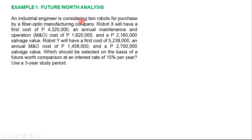Let's apply these formulas in this example. An industrial engineer is considering two robots for purchase by a fiber optic manufacturing company. Robot X will have a first cost of 4,320,000, an annual maintenance and operation cost of 1,620,000, and a salvage value of 2,160,000. Robot Y will have a first cost of 5,238,000, a maintenance and operation cost of 1,458,000, and a salvage value of 2,700,000. Which should be selected on the basis of future worth comparison?